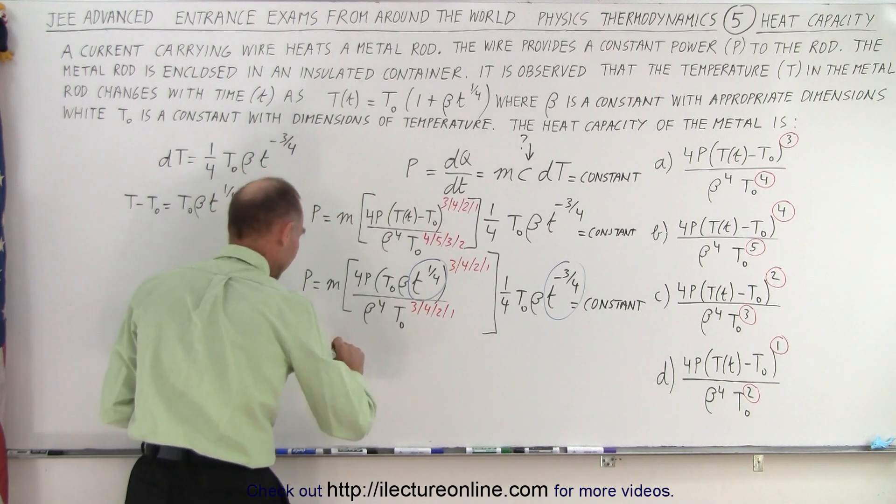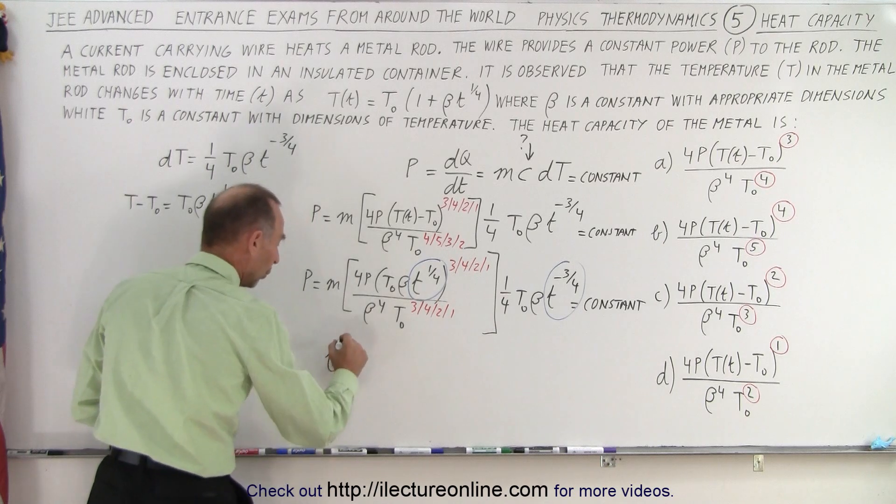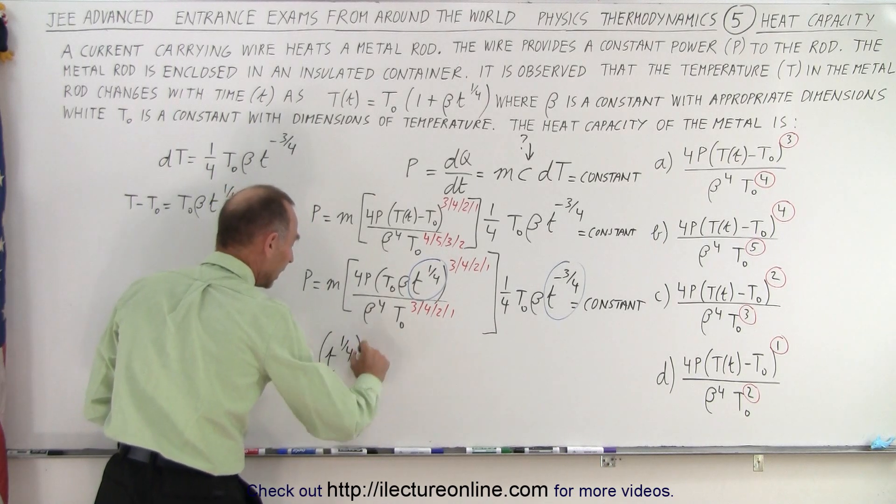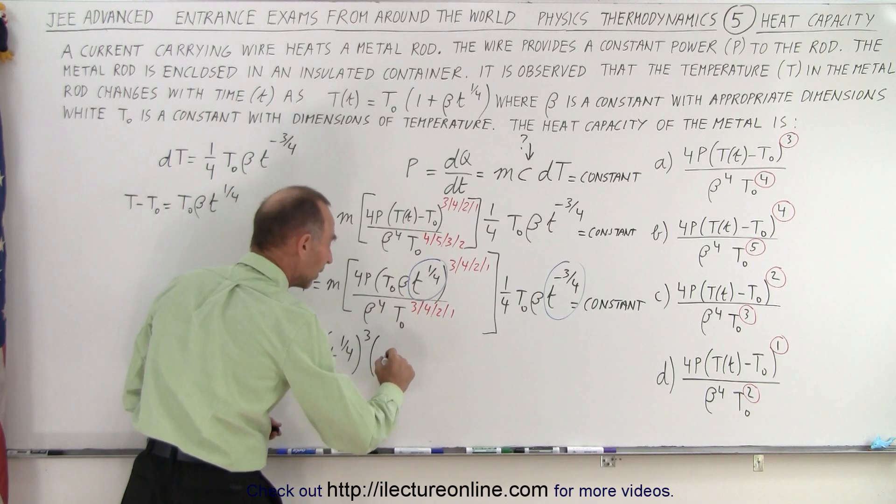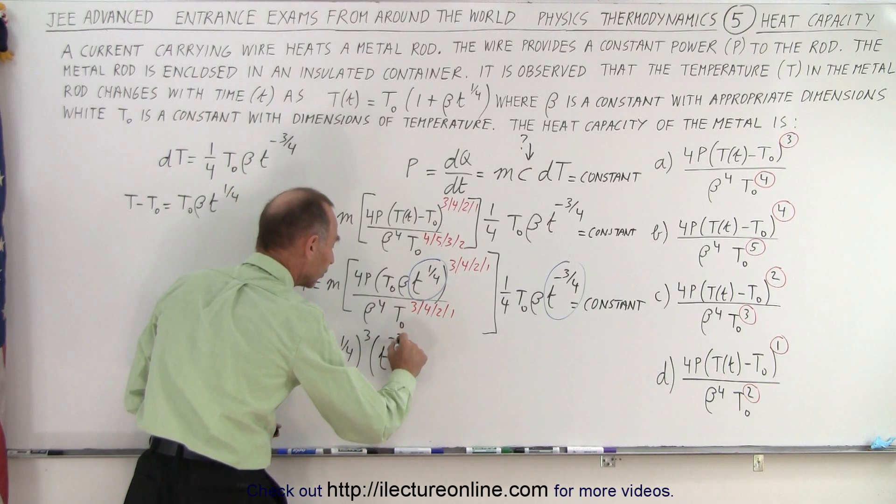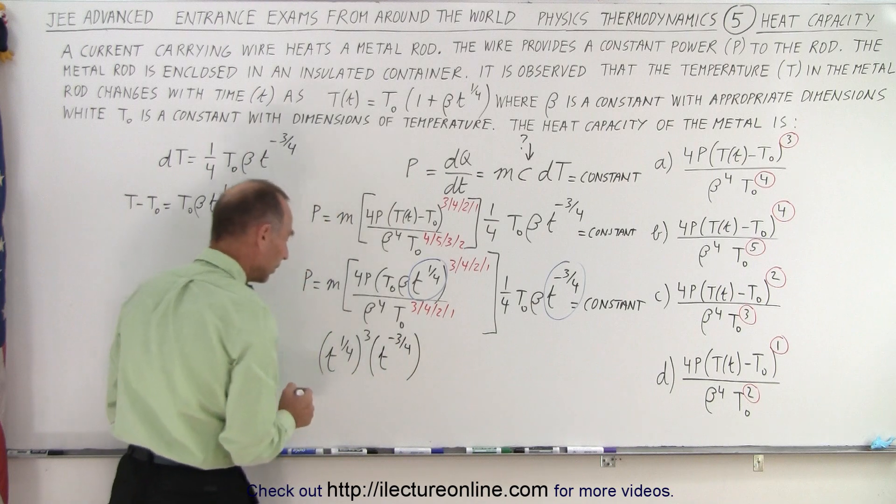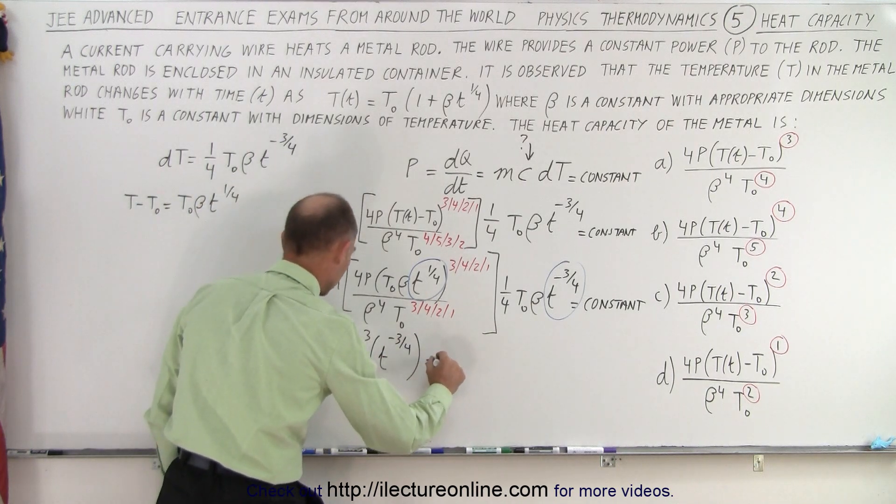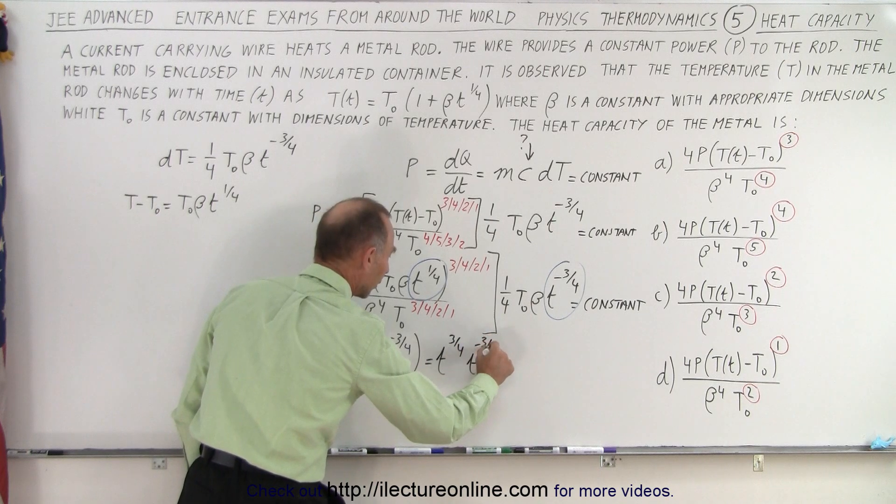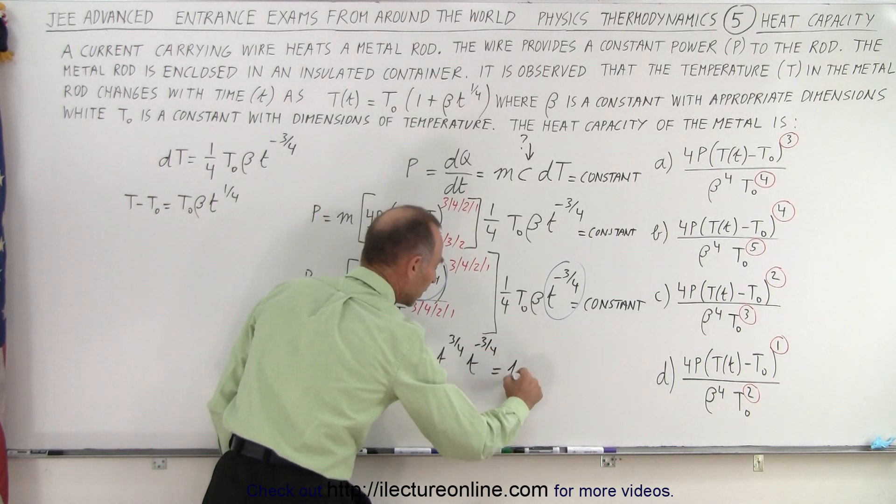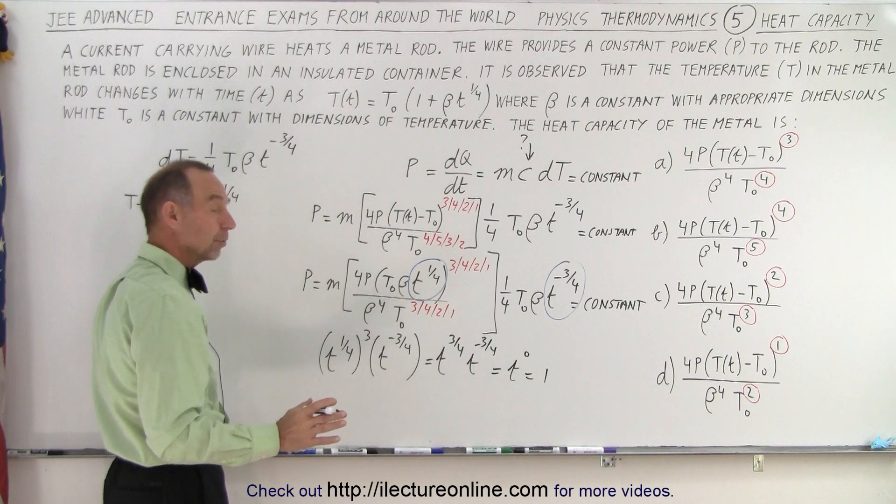So let me circle those in a different color. So this is not a constant and this is not a constant. So what I need to do now is take the appropriate exponent so that when I multiply these two together I get a constant. Let's see here. Let's see how we would accomplish that. So first of all, I can have t to the one quarter power raised to the third power and then multiply that times t to the minus three quarter power and see what I get. So when this is equal to t to the three quarters times t to the minus three quarters, and of course that would be equal to the zero, which is equal to one. That's a constant.